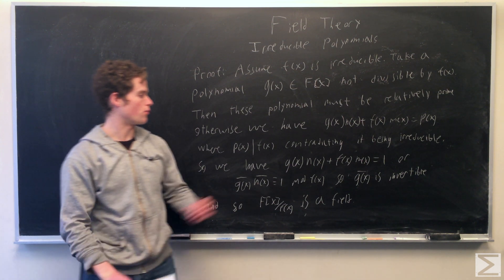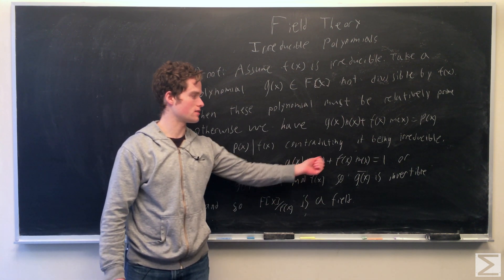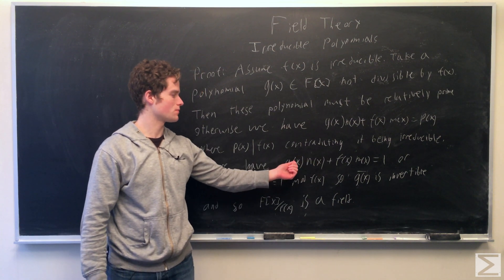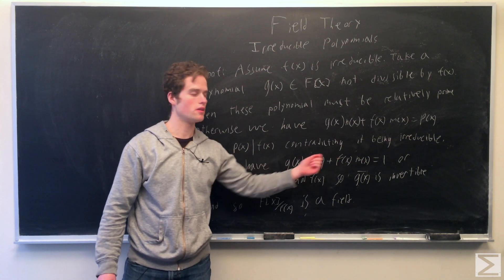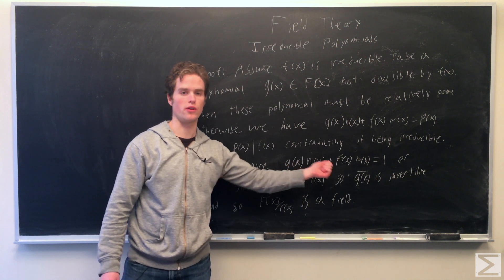And so we must be able to find polynomials n of x, m of x such that g of x n of x plus f of x m of x equals one, taking this thing modulo f of x.